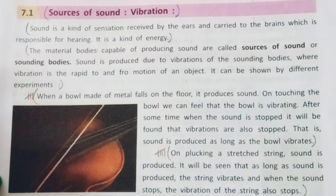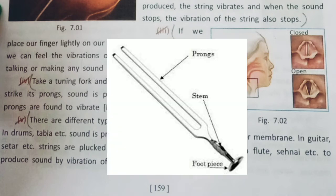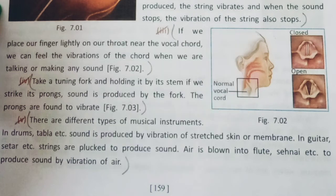Similarly, when we have a musical instrument and its string is plucked, the same thing happens. When we are talking, the larynx and vocal cords vibrate. We can see that those vocal cords are vibrating. With a tuning fork, we can feel the vibration very vividly. And with musical instruments like drums and tablas, the membrane vibrates.